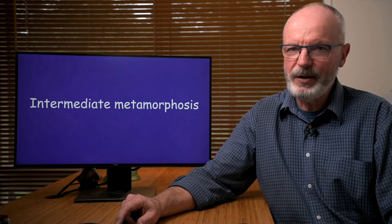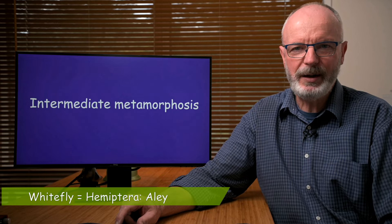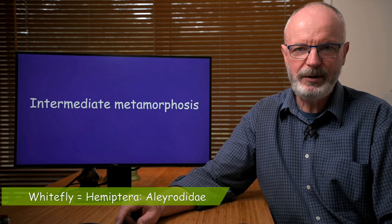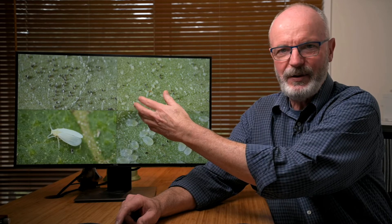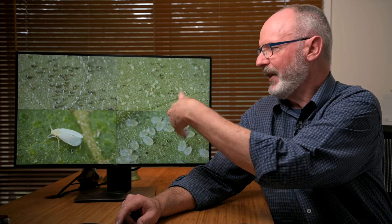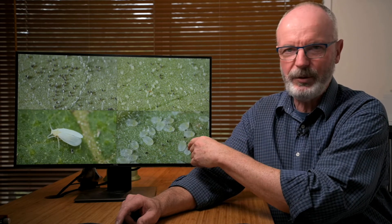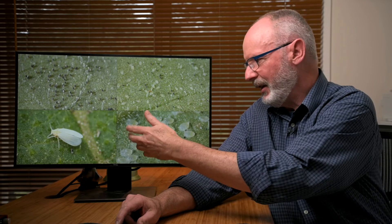Starting with whiteflies, there are about 120 different species in Australia, and they are members of the bug order Hemiptera in the family Alleyrodidae. Their life cycle starts with eggs — in this image the eggs are the grey things; when first laid they're white, but here the white things are actually parts of the leaf structure. Then they hatch into flattened oval-shaped nymphs which go through a couple of molts until the fourth instar nymph, and then you end up with an adult.